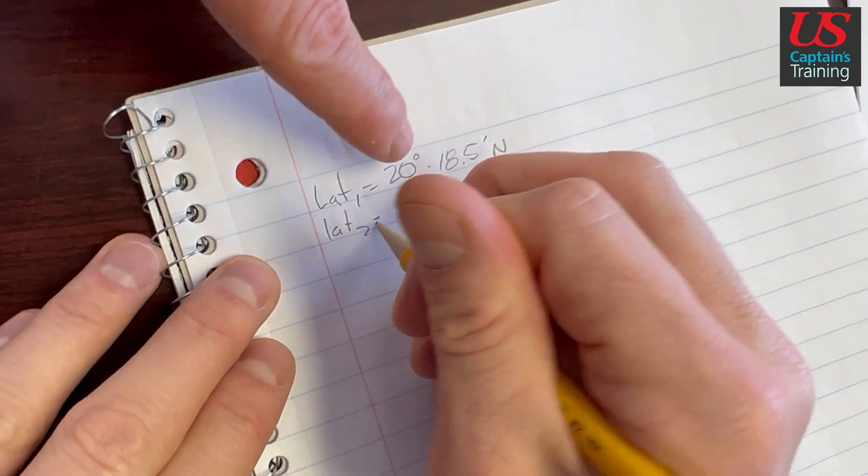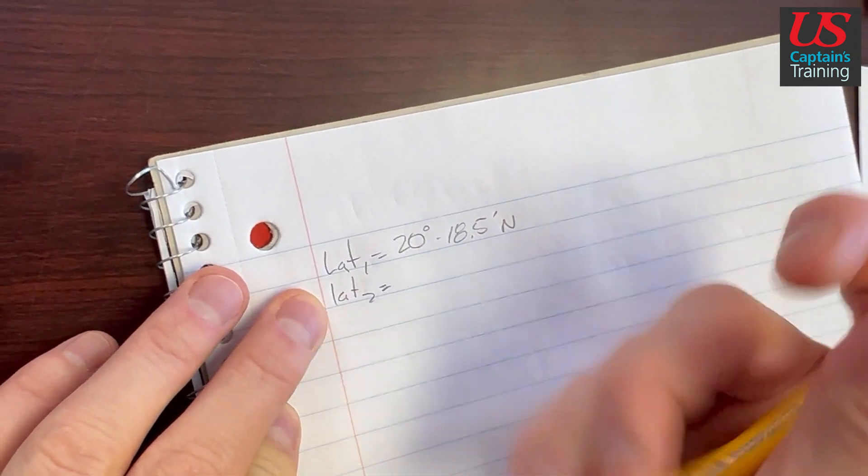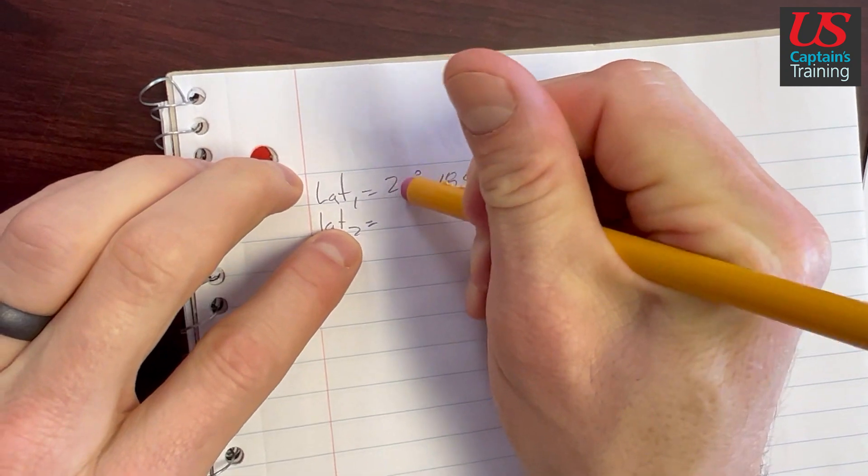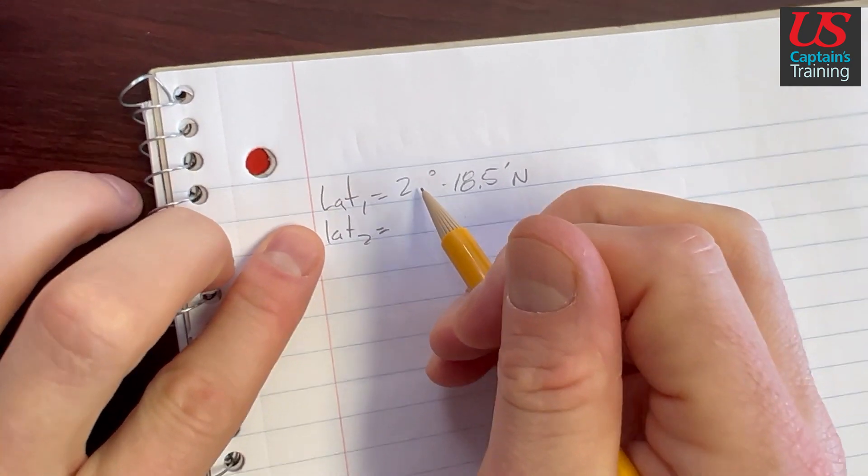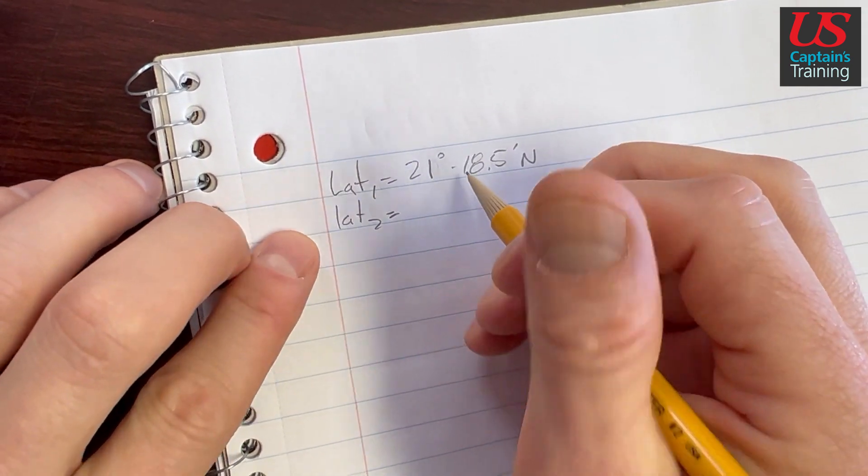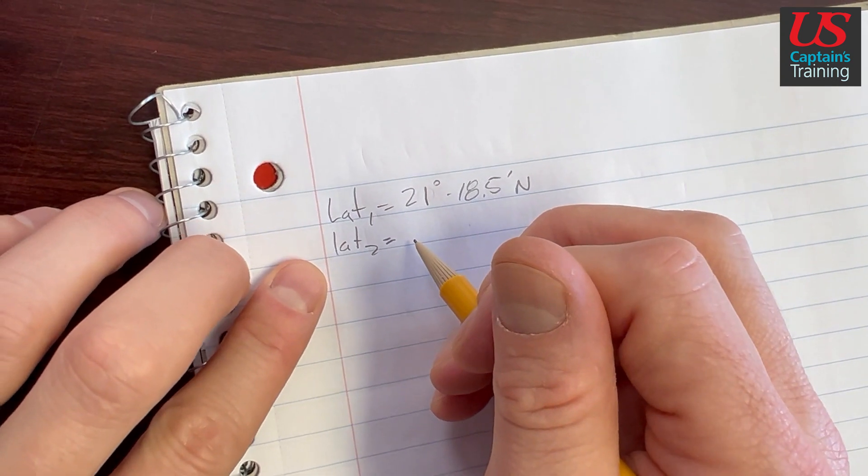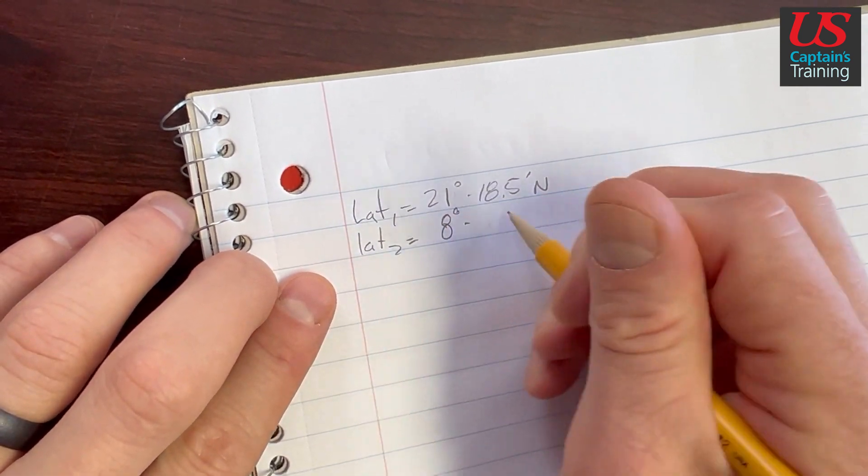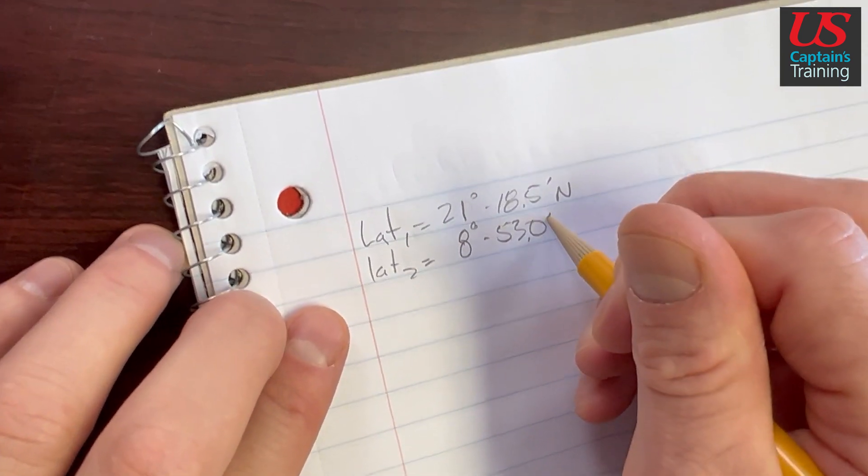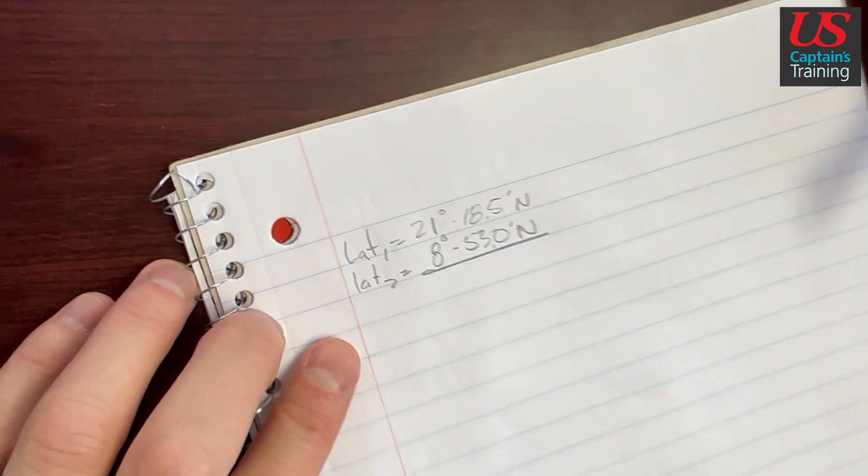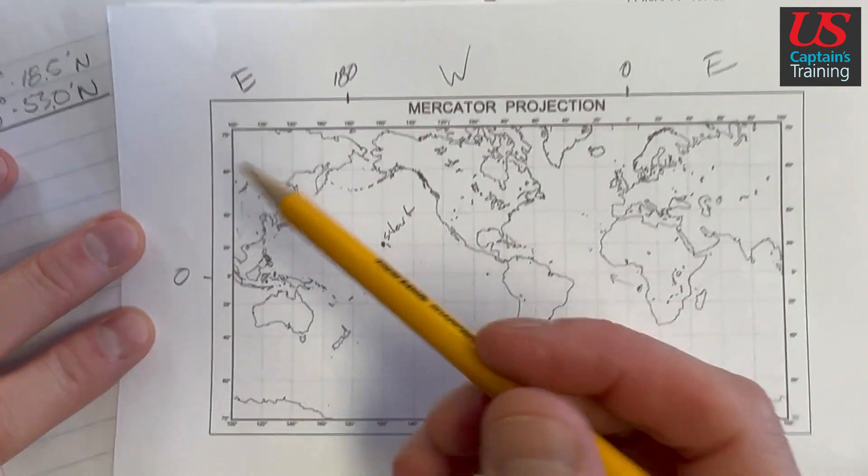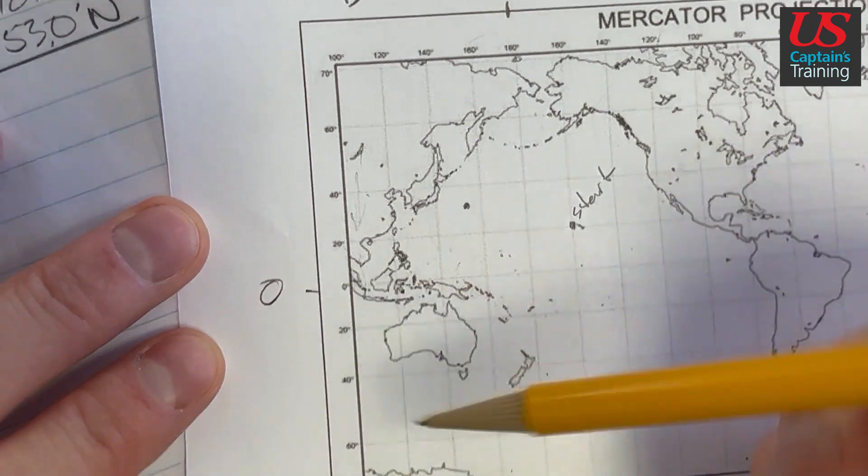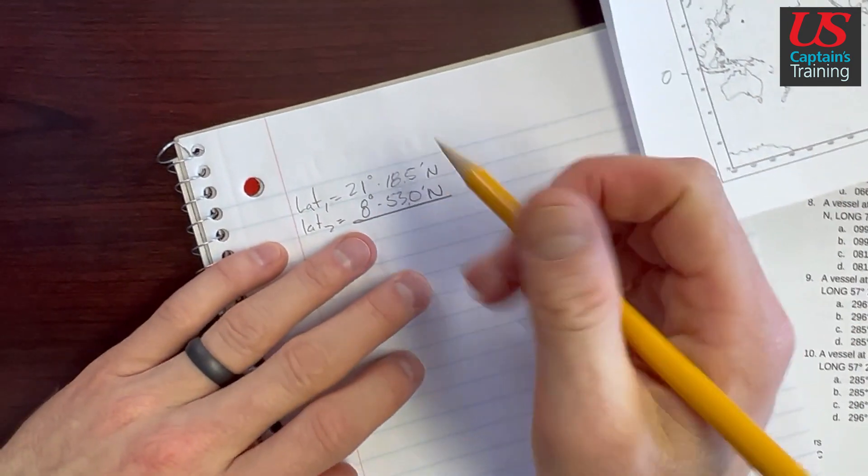Whoa, one second here. Latitude 1 equals 21 degrees 18.5 minutes north. Latitude 2 is equal to 8 degrees 53.0 minutes north. And so which way did we go? We need to understand which way we traveled north and south. We went from 21 to 8, we went south.